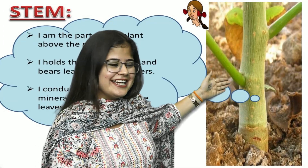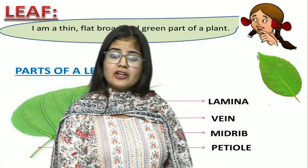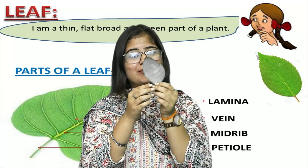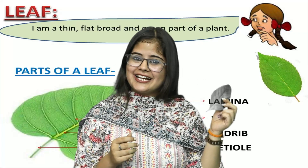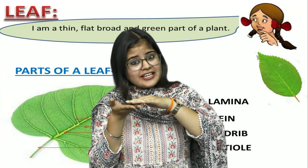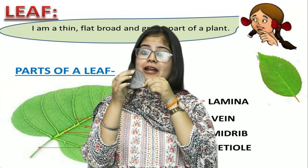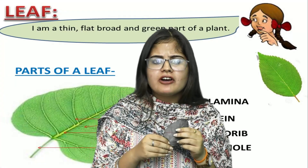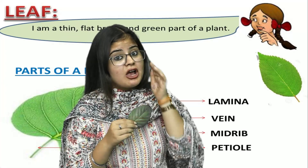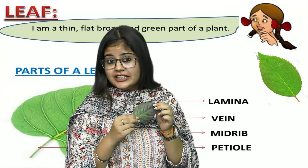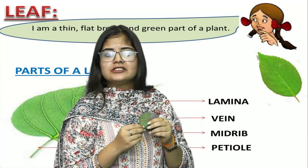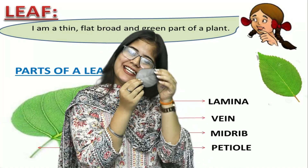Moving on to the next part of the plant — the leaf. A leaf is a thin, flat, and broad structure of the plant. Now, what are the different parts of a leaf? The very first part is the lamina. Lamina is the thin, broad surface of the leaf.